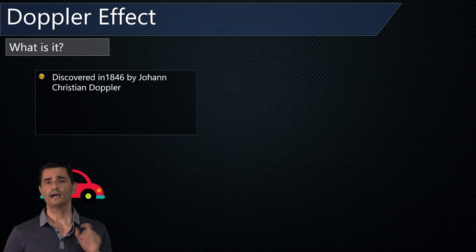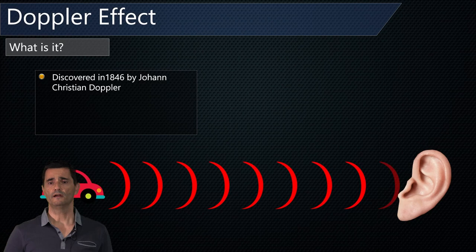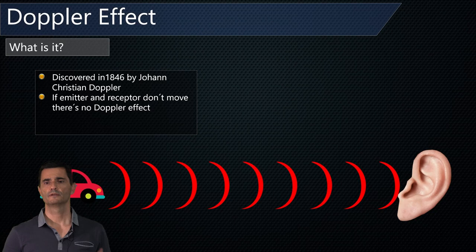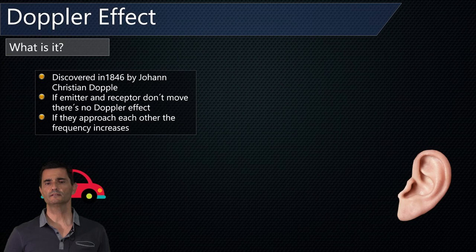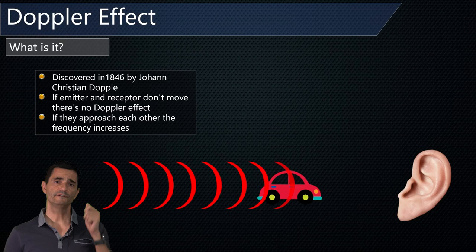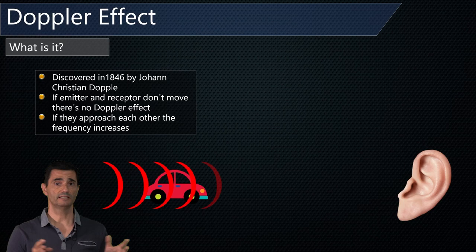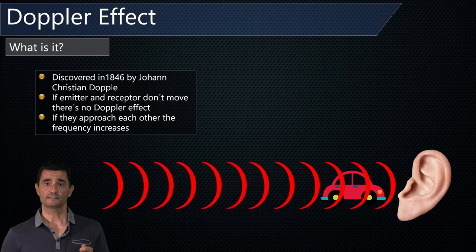Let's explain the Doppler effect. If we have an emitter and a receptor, the emitter is emitting sound at a given continuous frequency, and the receptor is receiving this frequency without changes — the same frequency — because there is no movement. There is no Doppler effect here. In the second case, the emitter is moving and approaching the receptor. It's always emitting at the same frequency, but the frequency that the receptor receives is higher. So when the emitter or the receptor is approaching the other, the frequency increases.